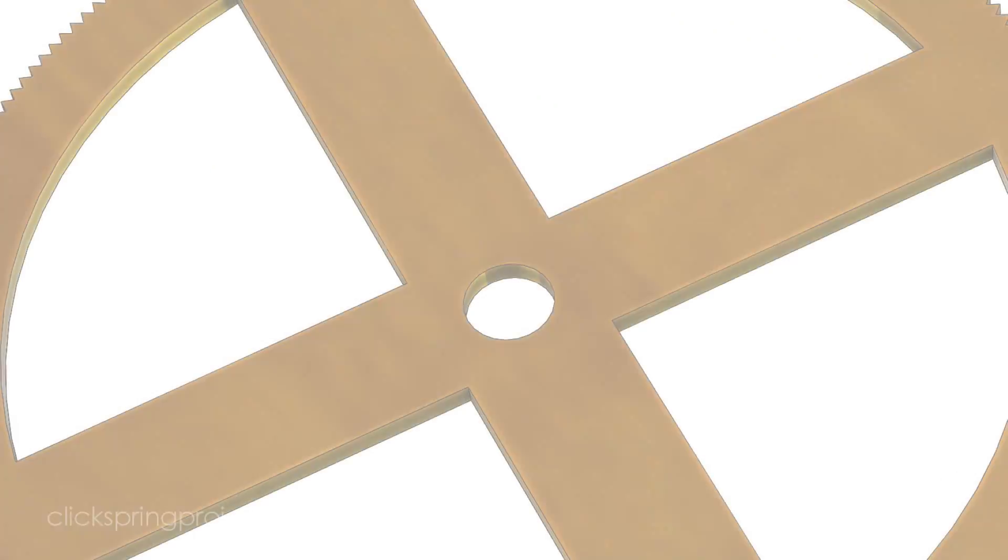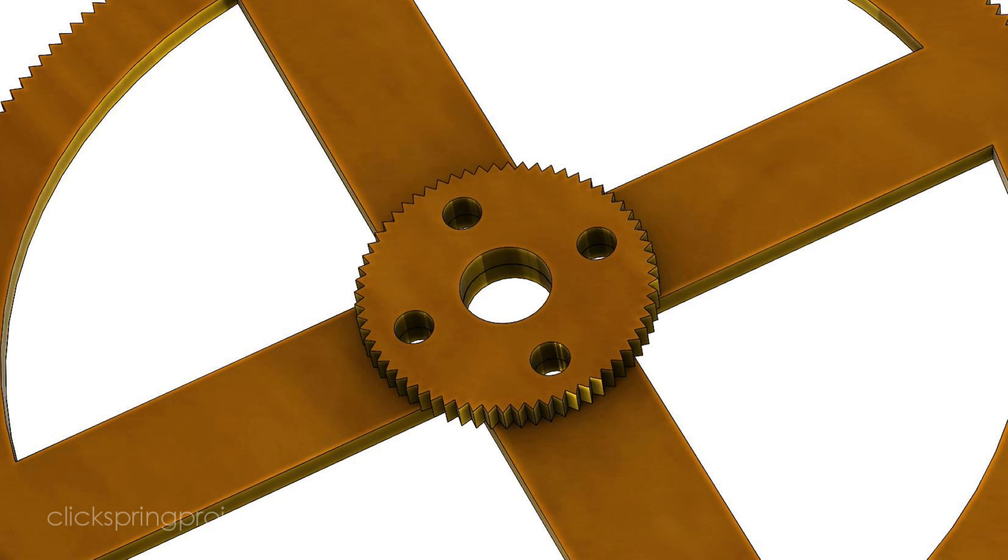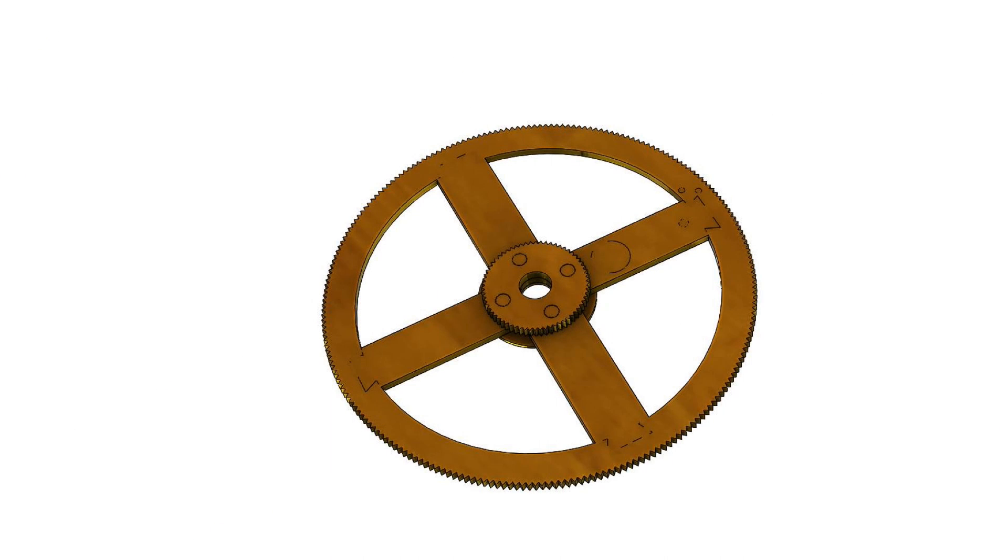Now before I do any more work with this wheel, I'd like to show you a bit more detail on where it fits into the mechanism. It's permanently fastened to the main solar drive wheel B1, and it's part of the gearing associated with the back half of the device. In fact it's the first wheel in that large and quite complex part of the mechanism.